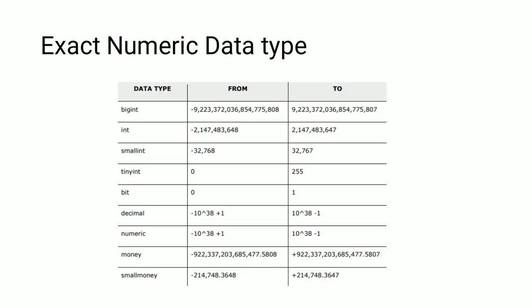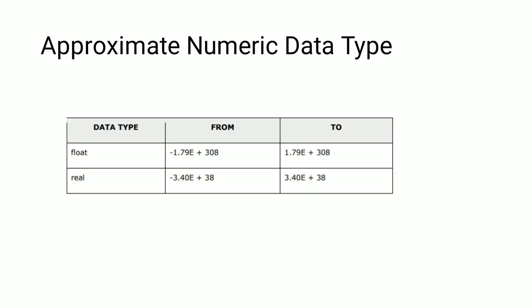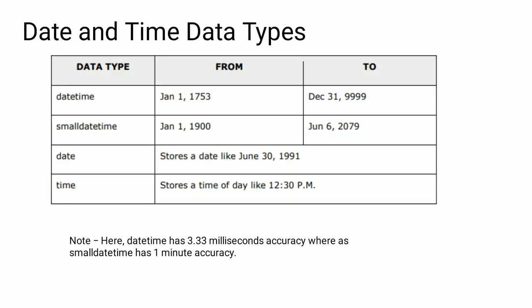Exact numeric data types include integer, small integer, and tiny integer, with a range from 0 to 255. Approximate numeric data types include float and real, with ranges varying from approximately -1.79 to +1.79×10^308. Date and time data types include datetime, smalldatetime, date, and time, with ranges from January 1, 1753 to December 31, 9999.